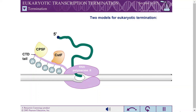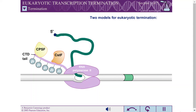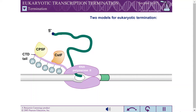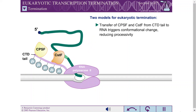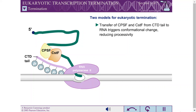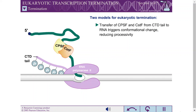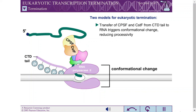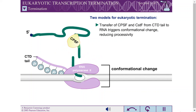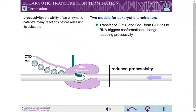Two basic models have been proposed to explain the link between polyadenylation and termination. The first model proposes that the transfer of CPSF and CSTF from the polymerase CTD tail to the RNA triggers a conformational change in polymerase. This conformational change might reduce the processivity of polymerase, leading to dissociation soon afterward.